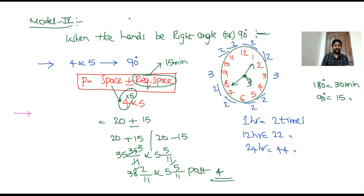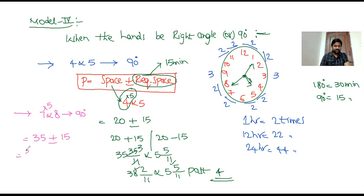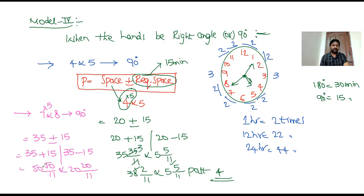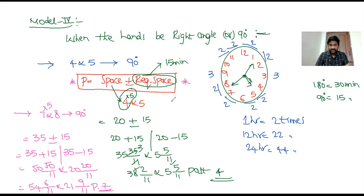Another example: between 7 and 8 o'clock, hands be 90 degrees. Space = 7 × 5 = 35. Required space = 15. So 35 + 15 = 50 and 35 − 15 = 20. Then 50/11: 11 × 4 = 44, remainder 6 → 54 6/11 past 7. And 20/11: 11 × 1 = 11, remainder 9 → 21 9/11 past 7. Both answers are past 7.